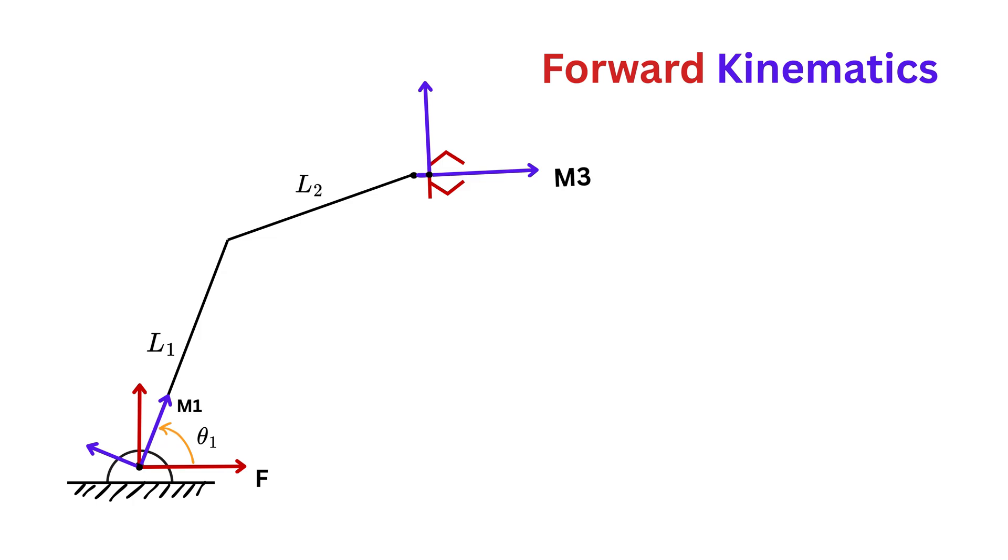Now do the same using M2 frame at this joint for link two. Keep it initially aligned with M1 frame, then translate it at this joint and then rotate it by an angle theta two with respect to the previous frame M1 in counterclockwise direction, such that the x-axis of this M2 frame is now parallel with link two.